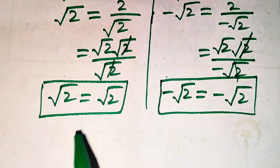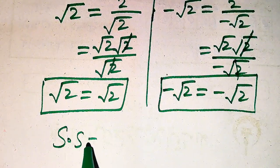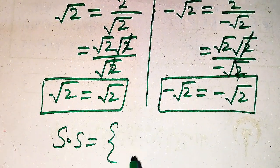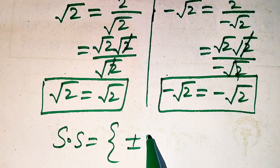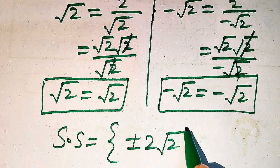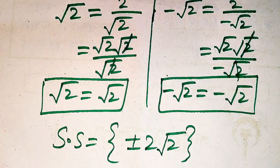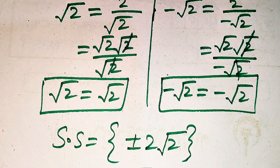This is the final solution of the given equation. The solution set is x equals plus or minus 2 times square root of 2. Thank you so much for watching this video. Please subscribe to my channel for more exciting videos.